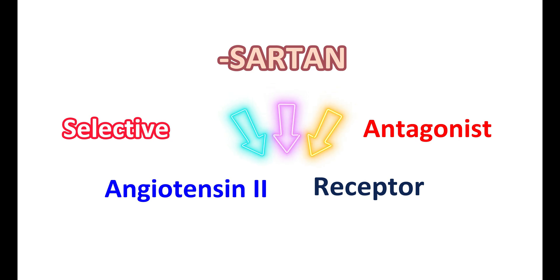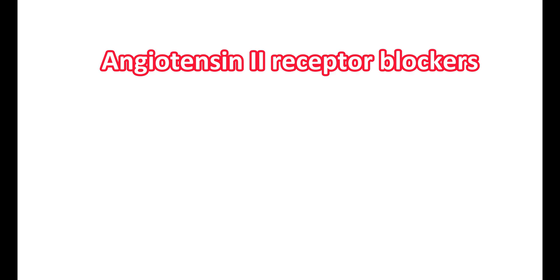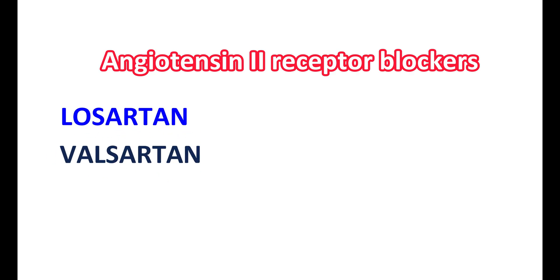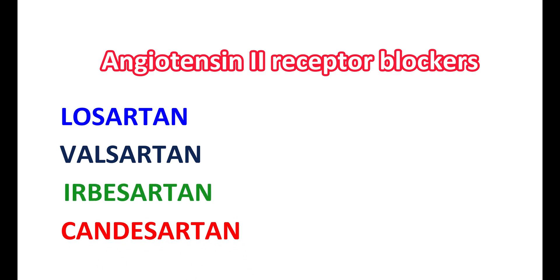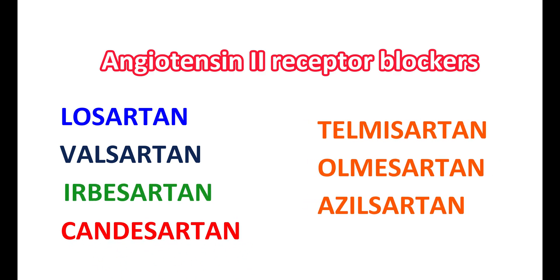All ARBs end with the suffix sartan. Angiotensin 2 receptor blockers mainly include medications like losartan, valsartan, irbesartan, candesartan, telmisartan, olmesartan, and azilsartan. All these share the same suffix sartan and are classified as angiotensin 2 receptor blockers.